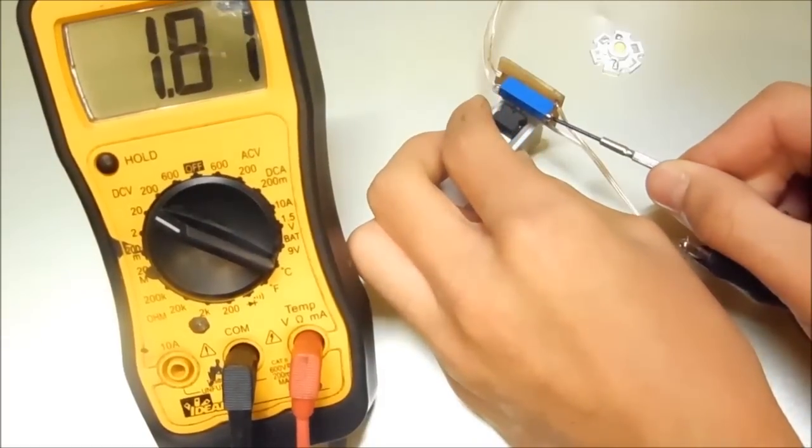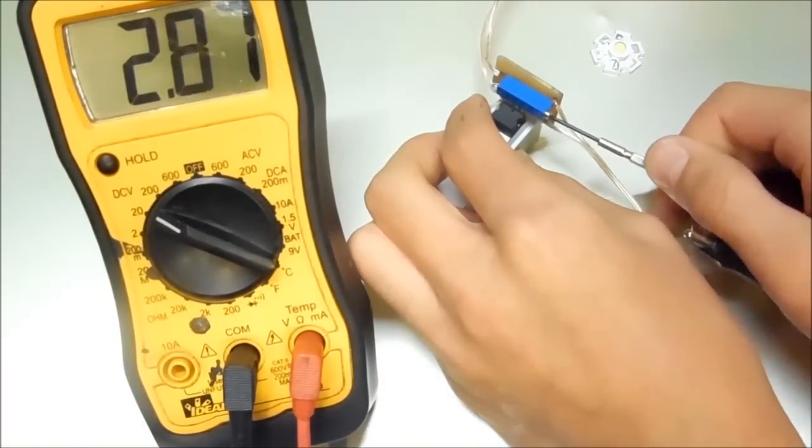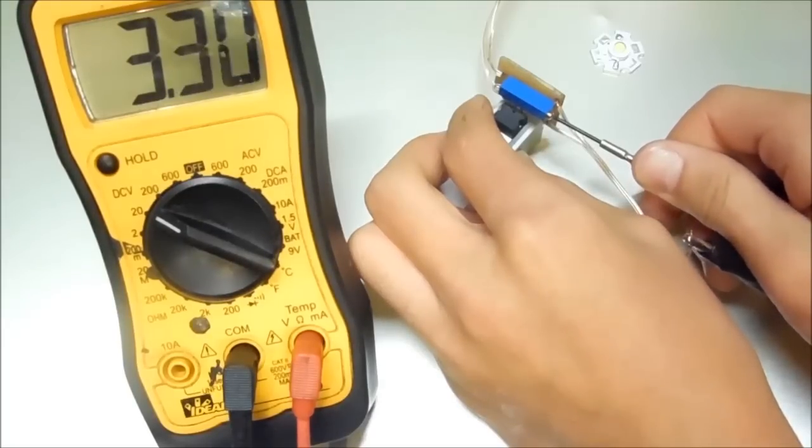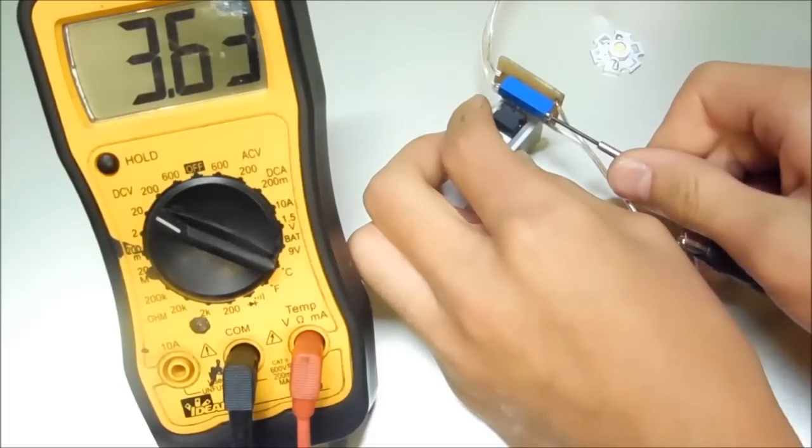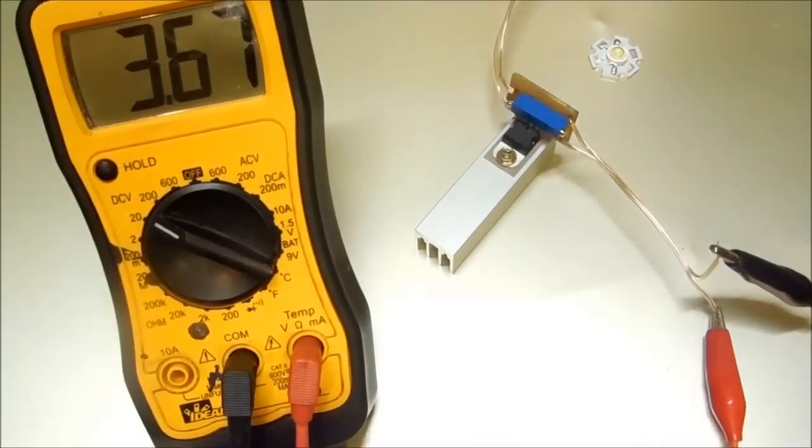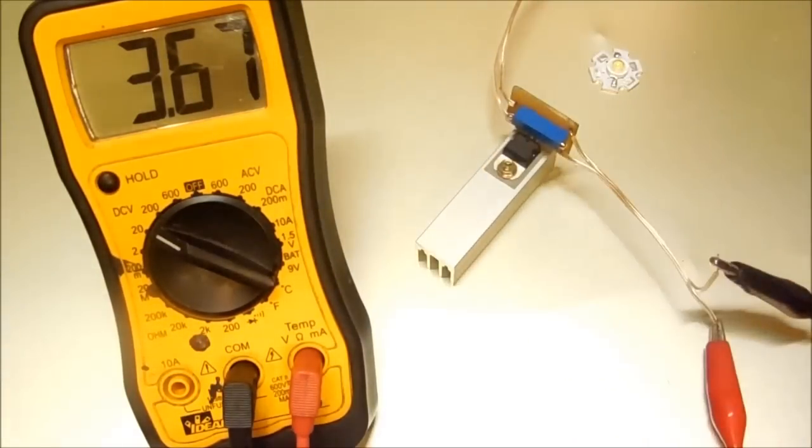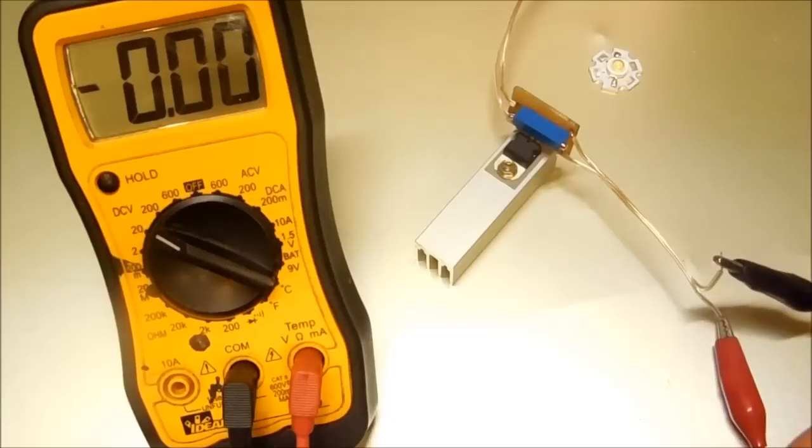I'm going to take the screwdriver here and adjust the LED driver that I made to 3.6 volts. 3.67 looks good, and I'm going to remove the clip leads from the voltmeter.